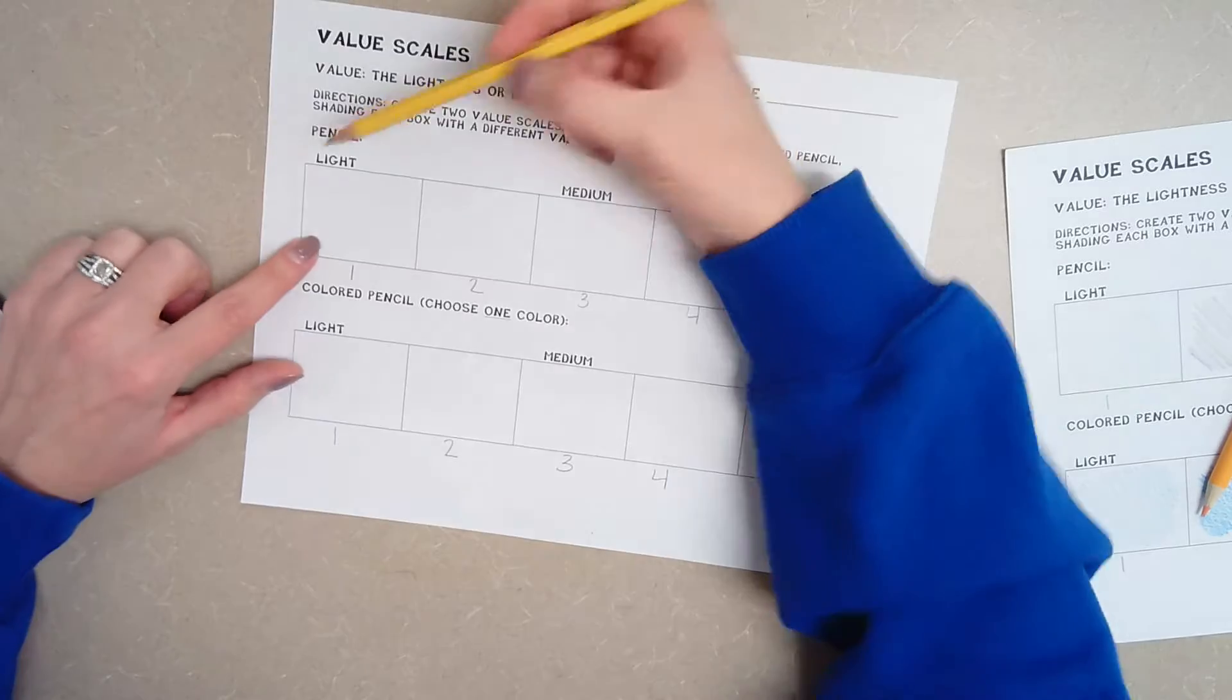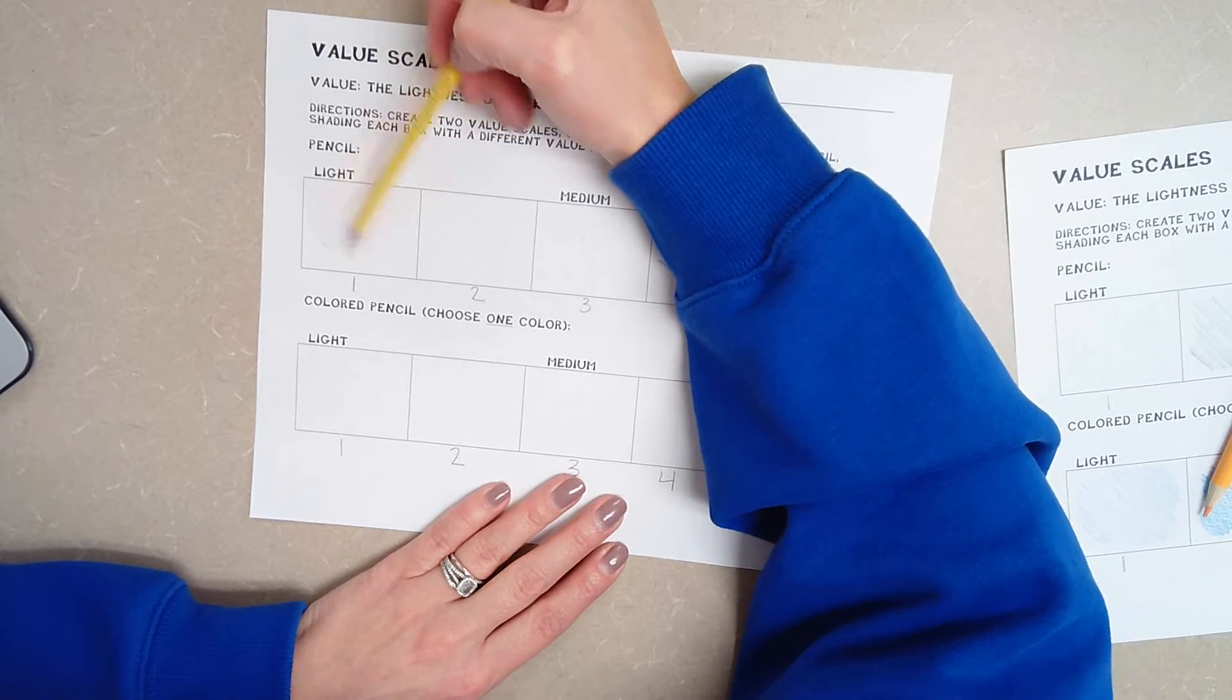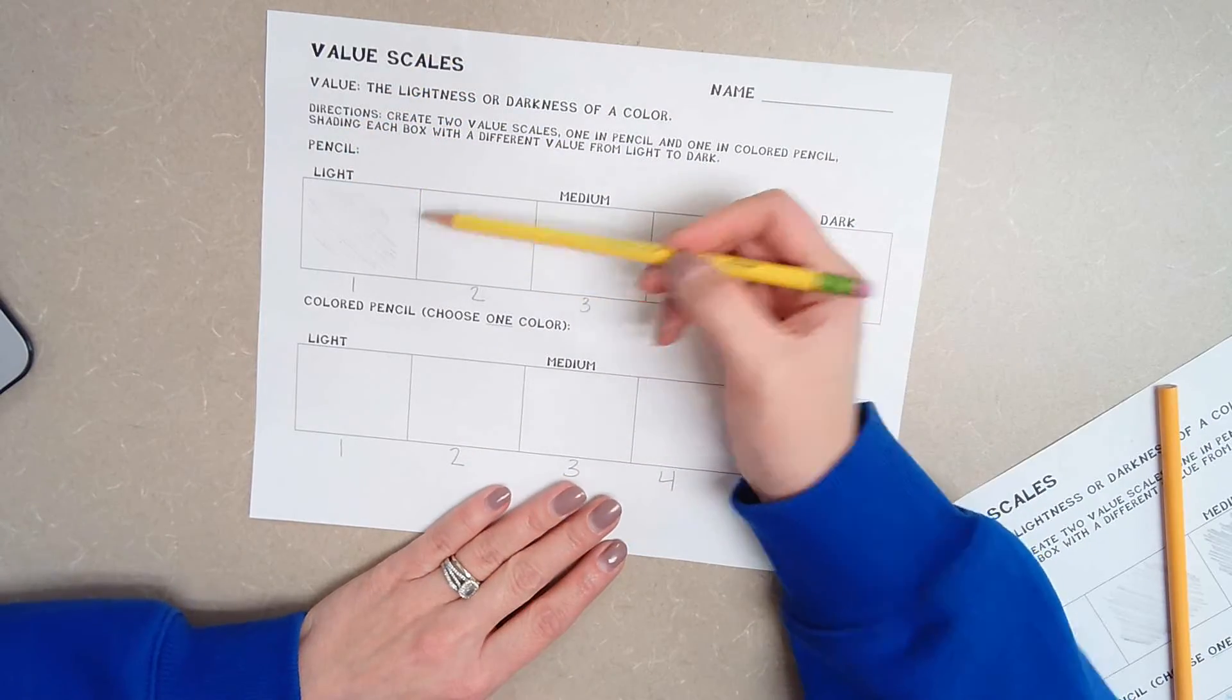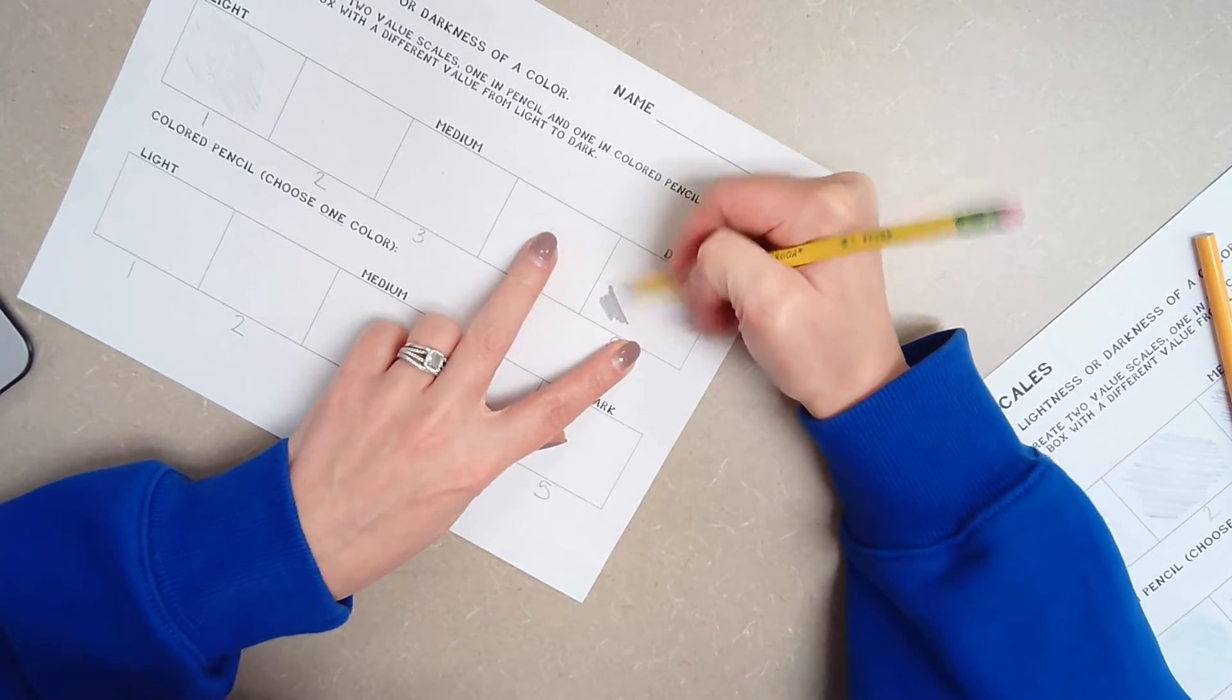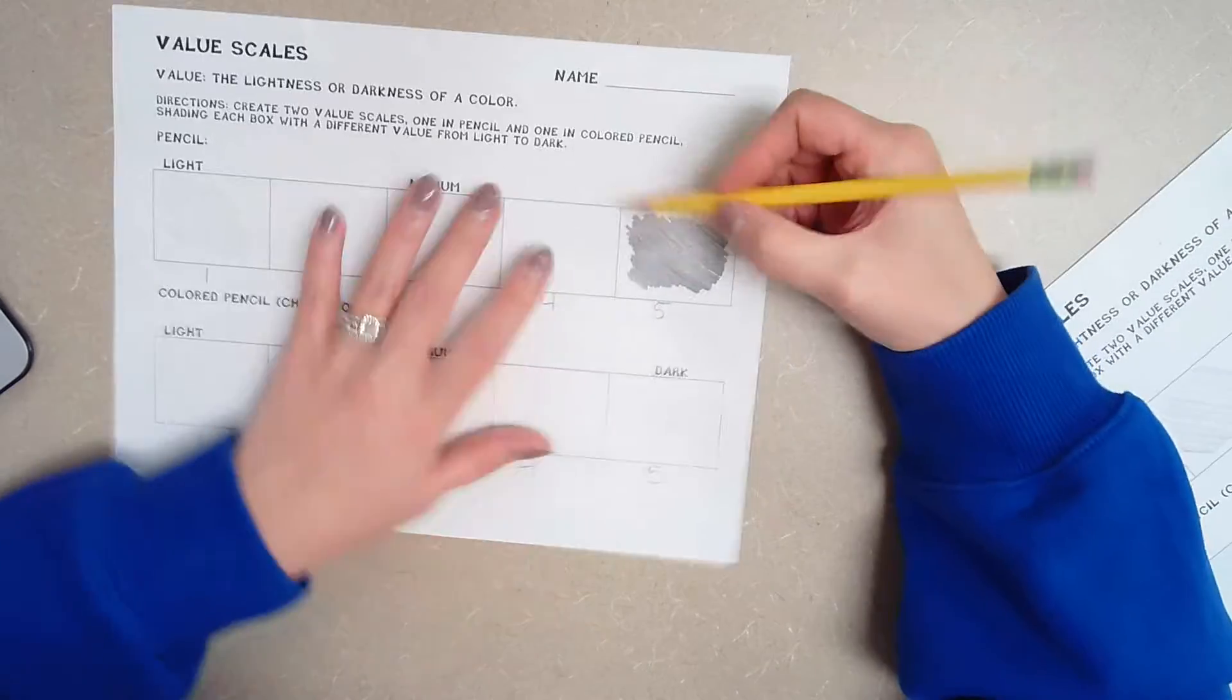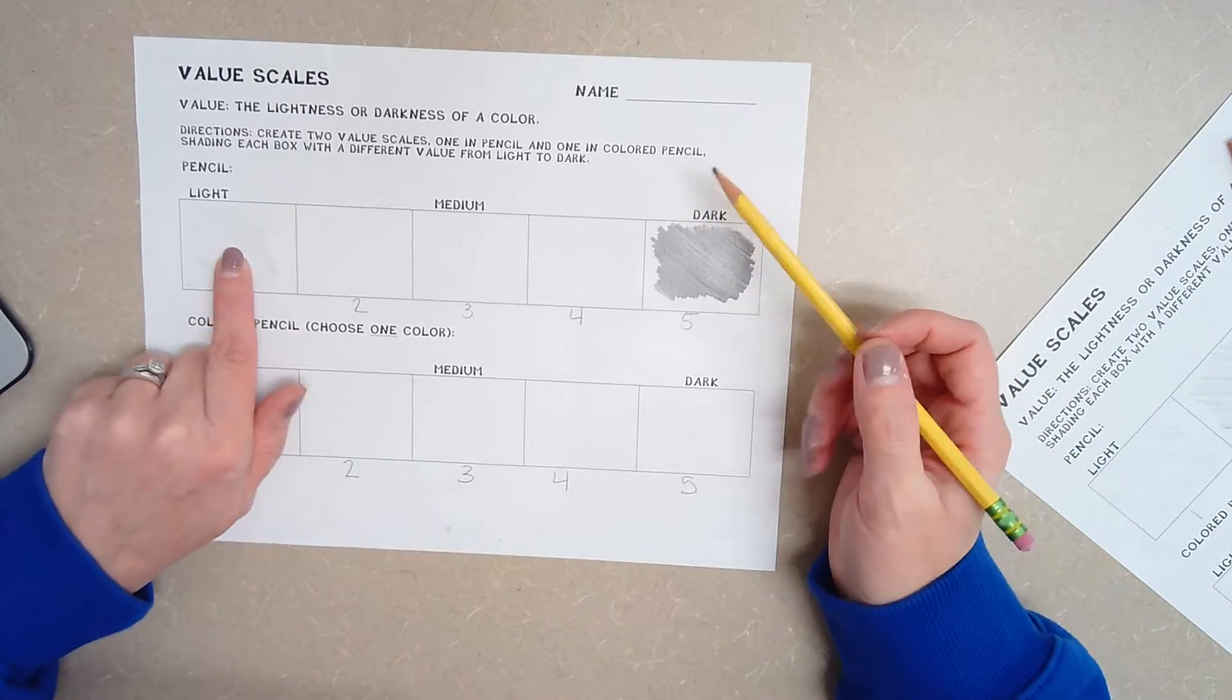Now I'm going to use pencil first. Your number one box, this is the very lightest you can color. So I'm just taking my pencil and I'm barely touching the paper. I'm barely touching it at all. So there's number one. Number five is the darkest you can go. So I am pressing down as hard as I can with my pencil. Now, I'm not coloring in the whole box, I'm just coloring in a part of the box. I want you to color in the whole box so it's nice and neat. Now we're done with number one and we're done with number five.